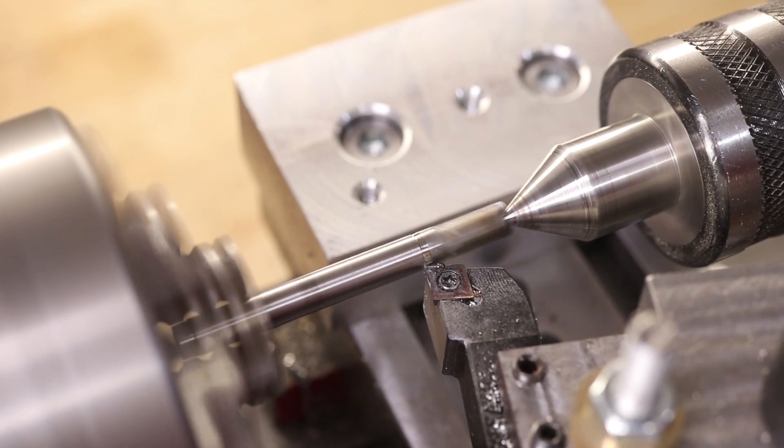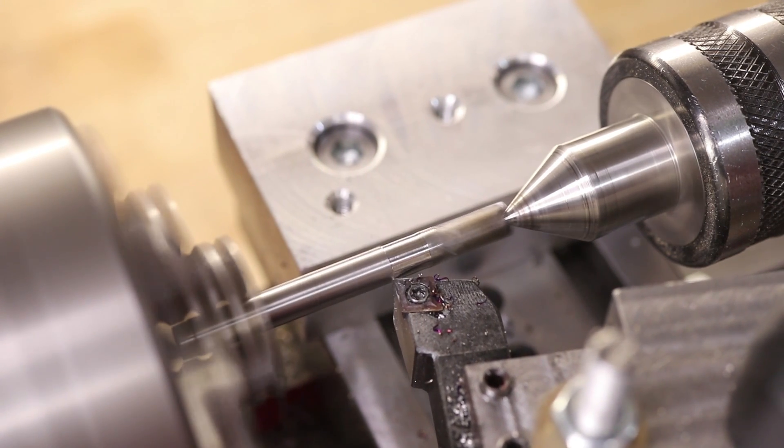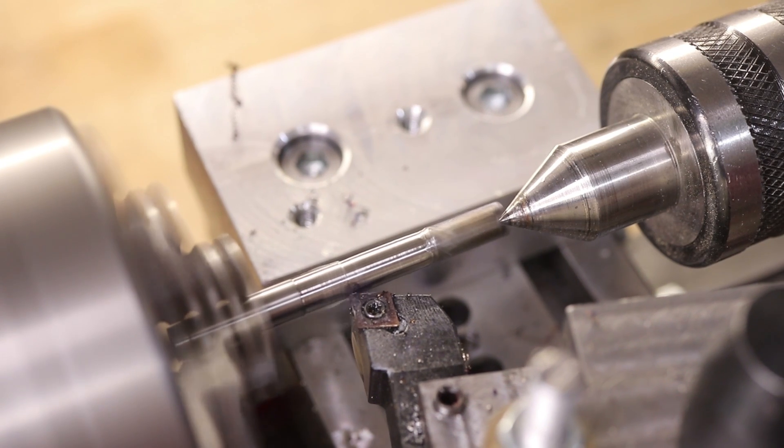The carbide easily turns the high speed steel shank, and I was very happy to sacrifice this tool because it was nearing the end of its service life.